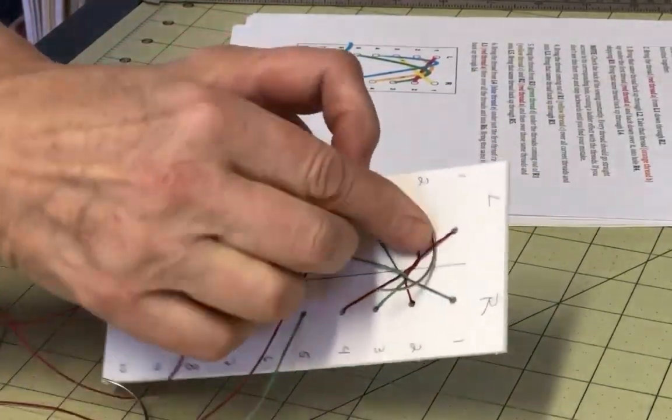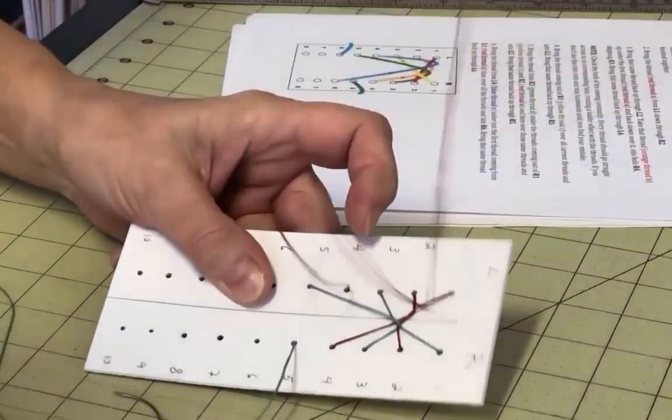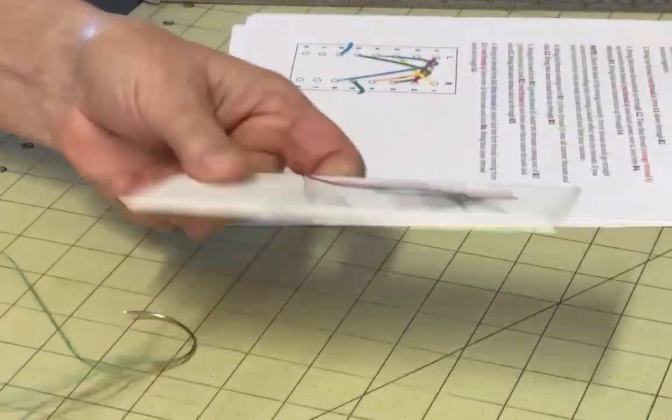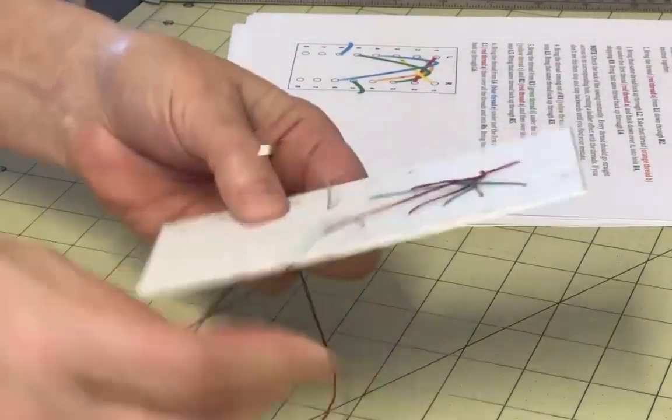Lastly, bring the thread coming out of L4, under just the first thread coming from L1, over all the threads, and then into R6. Bring this thread back through L6. All of this got us through just page one of the instructions.